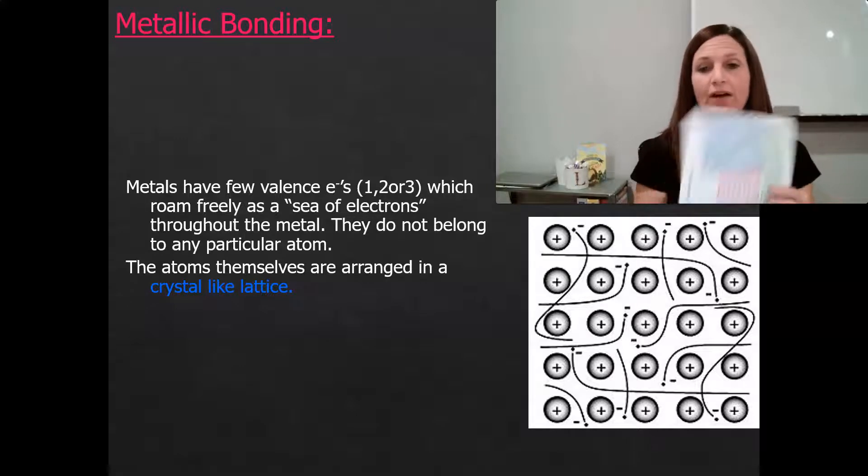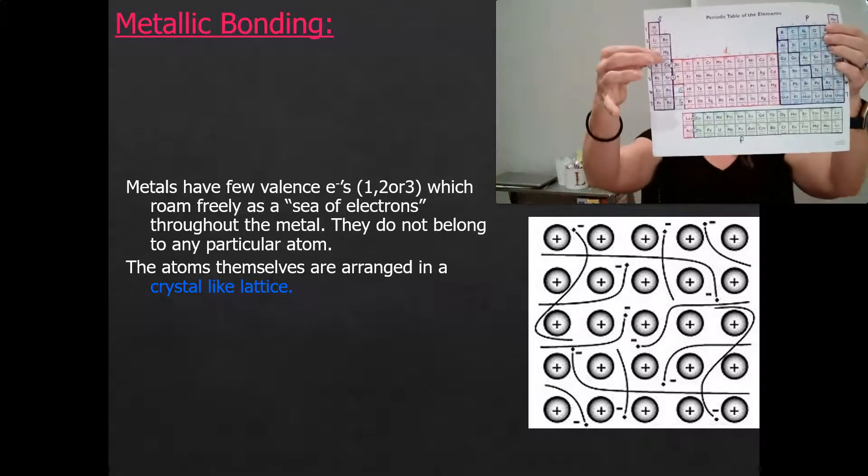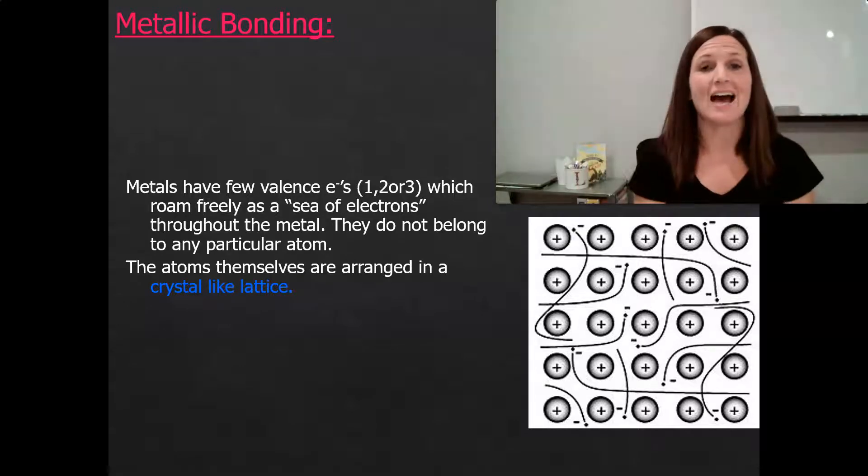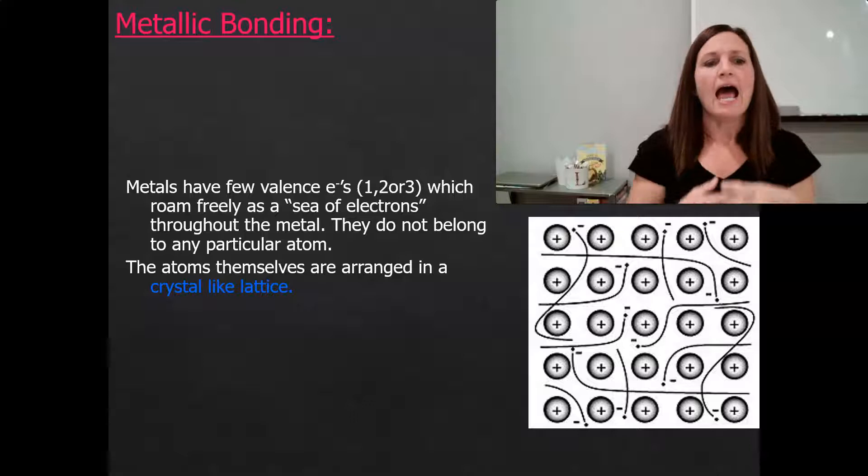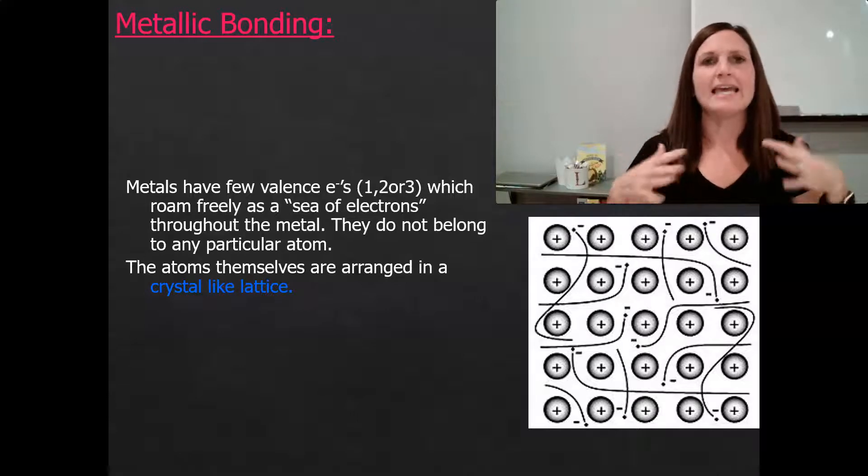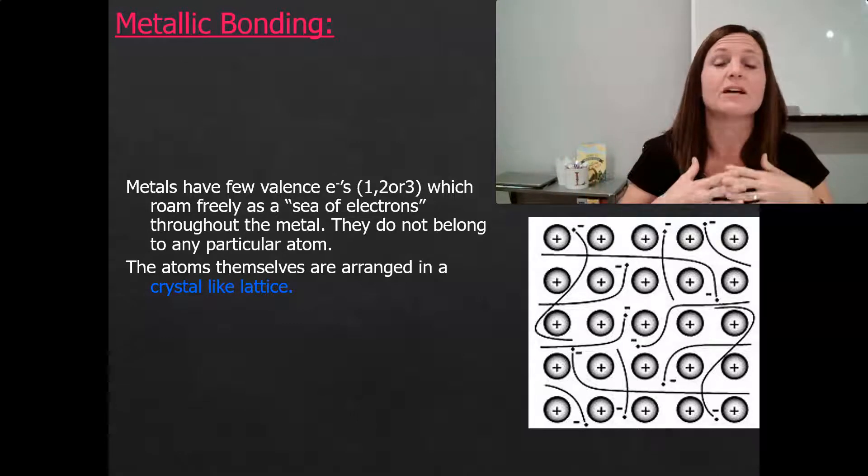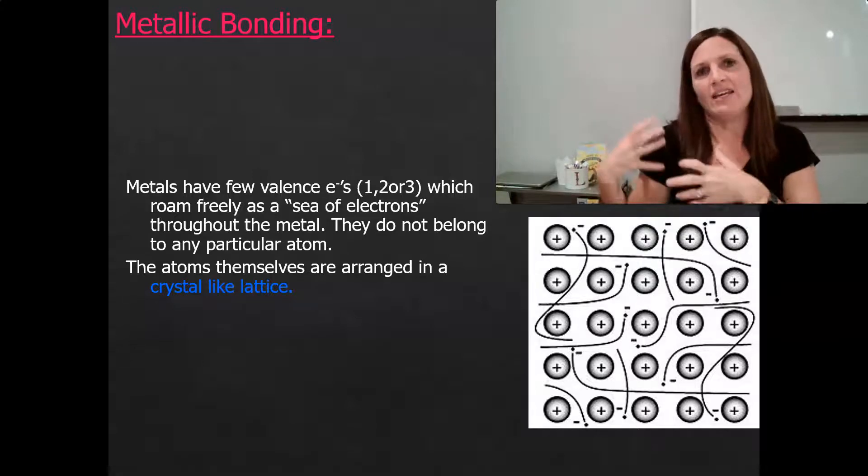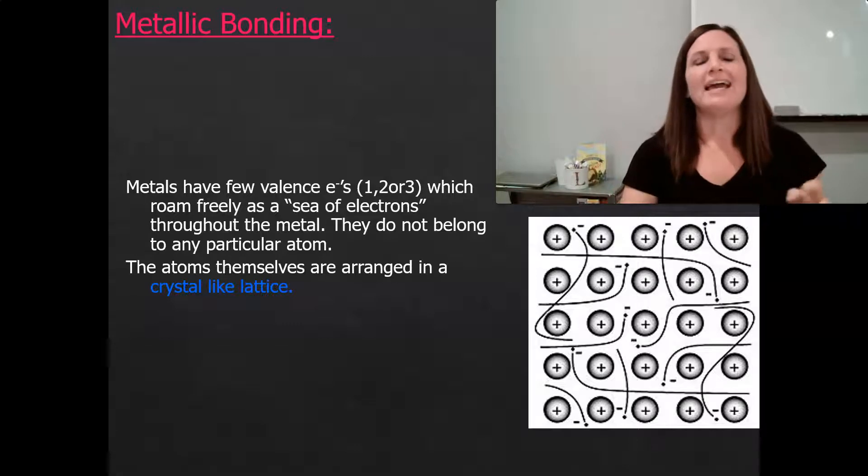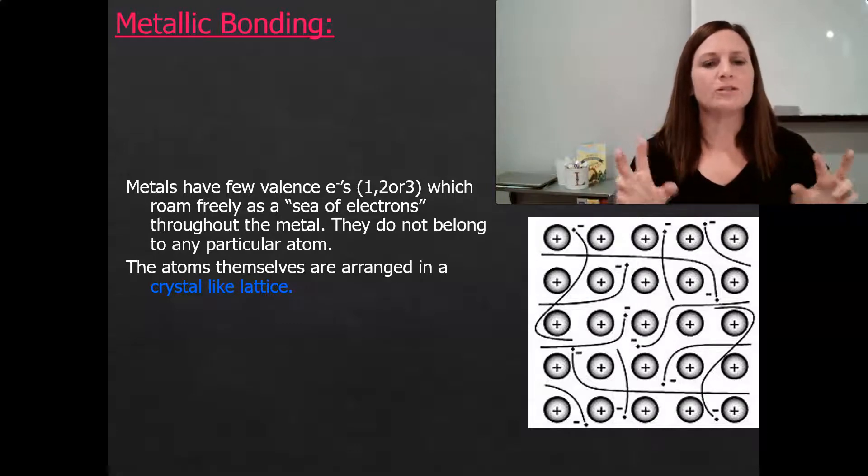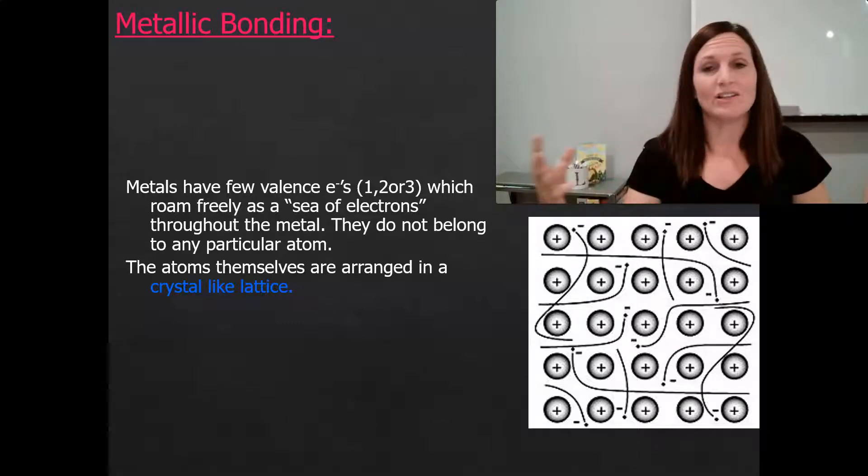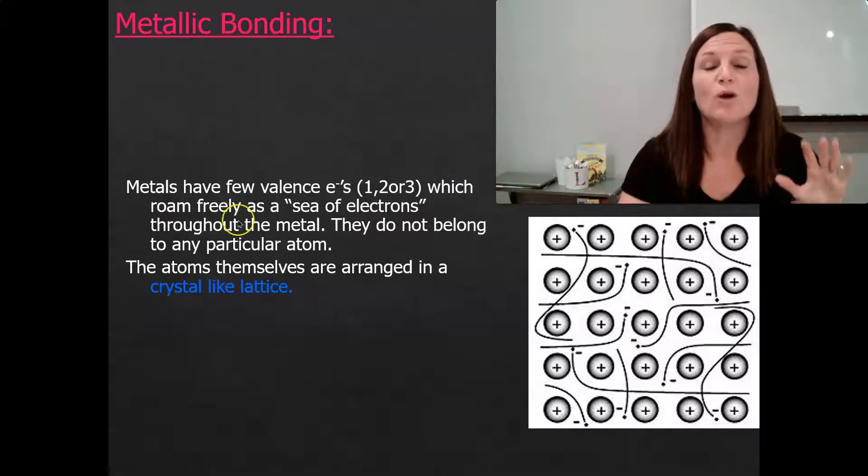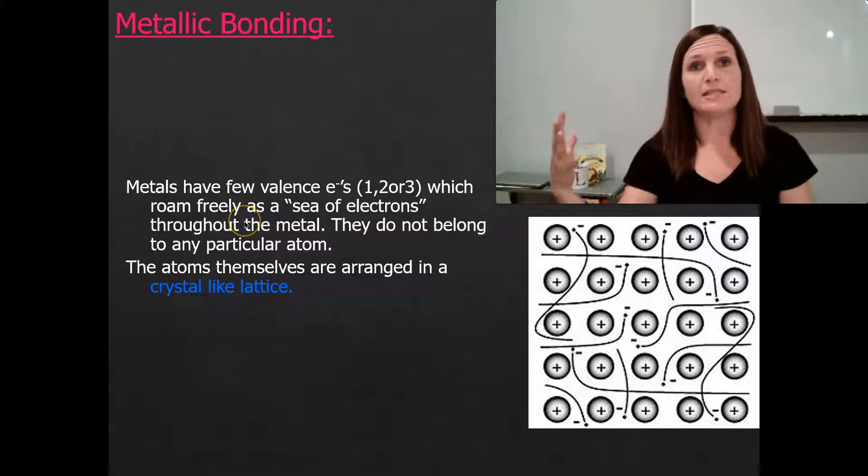Also, because of how low down they are on the periodic table, metals tend to have a lot of electrons. So what they do is they care for those electrons kind of collectively. Instead of sharing, owning, having, or trying to steal, metals take a way more sea of electron approach. They allow the electrons to roam freely throughout the metals.